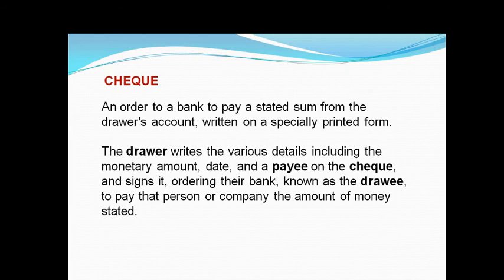There are mainly three terms: drawer, payee, and drawee. The drawer is the person who issues the cheque. The drawee is generally the bank. The payee is the one who receives the money from the bank — the payee may be a person or a company.